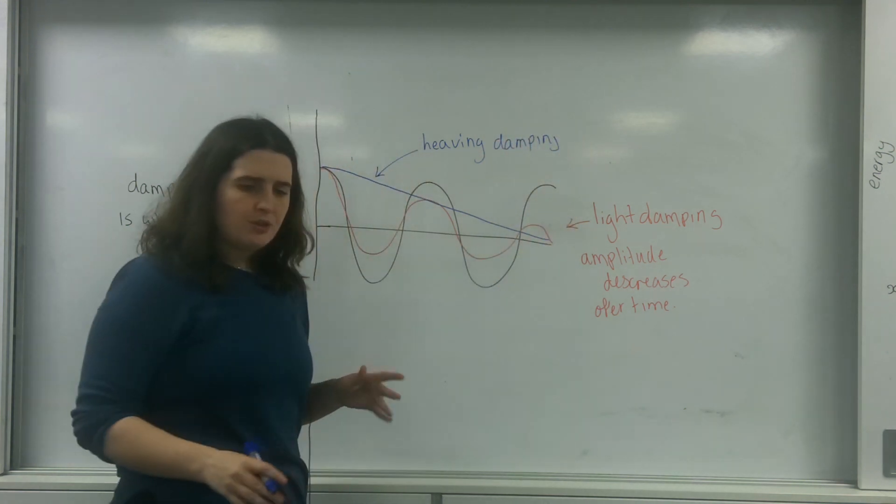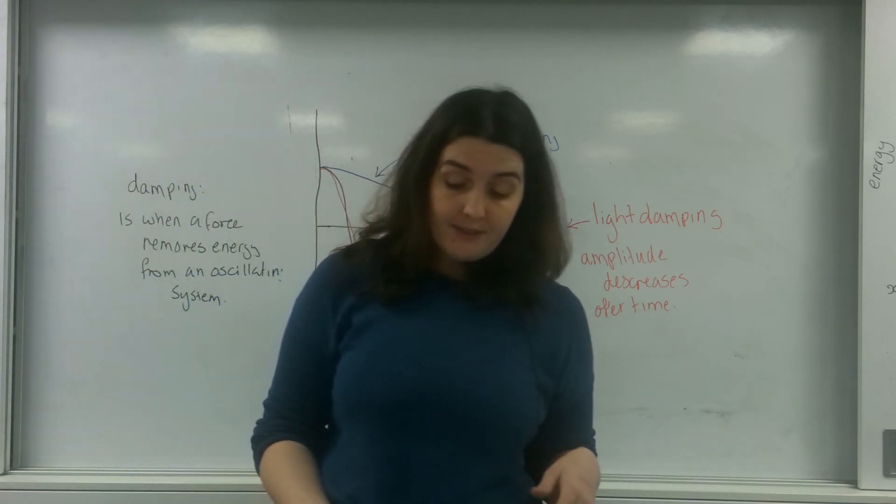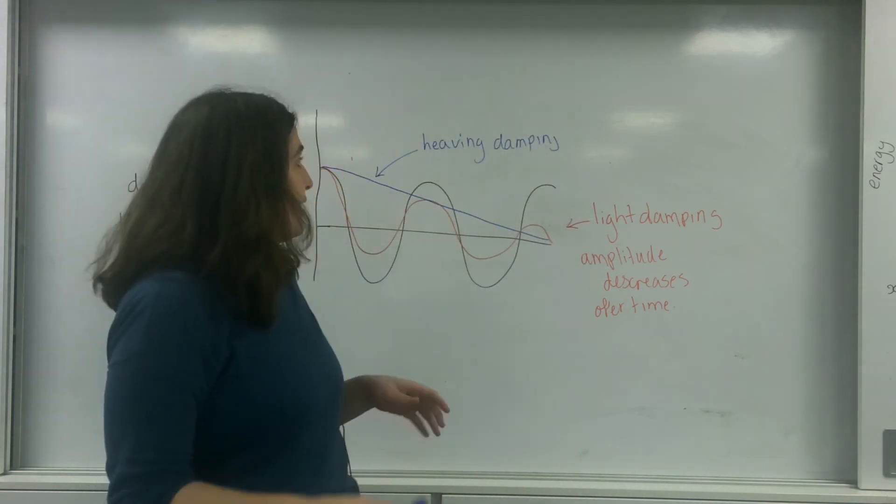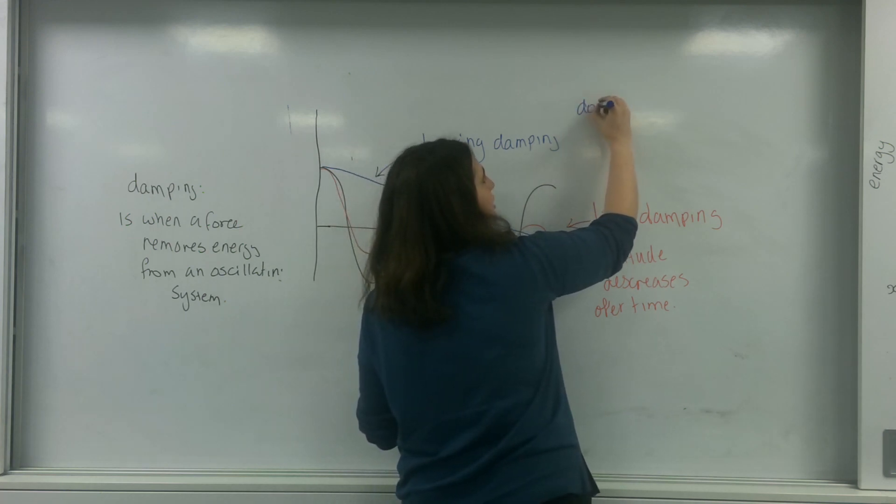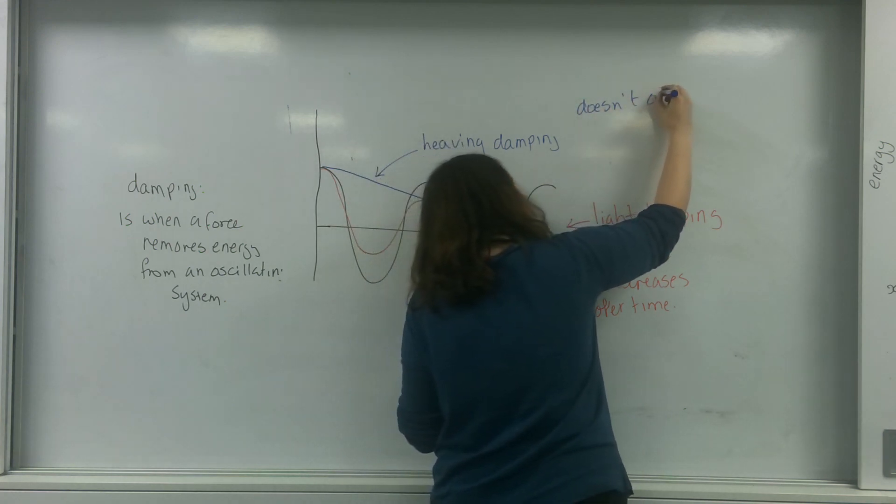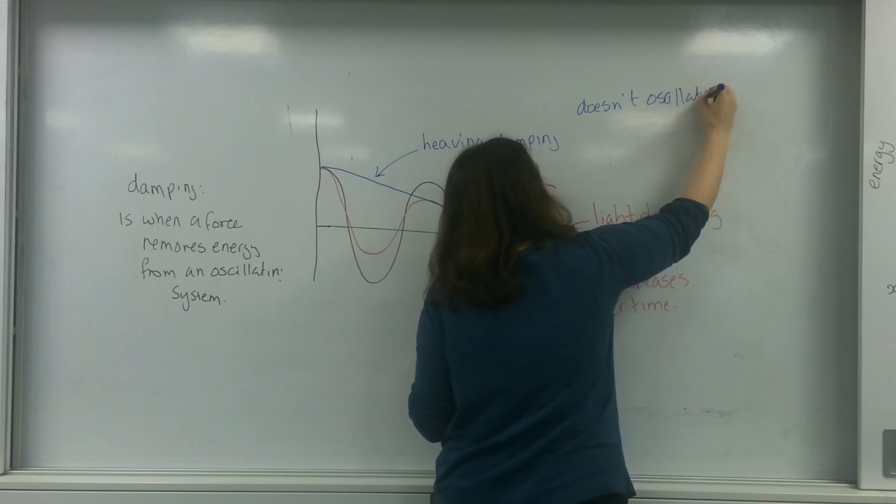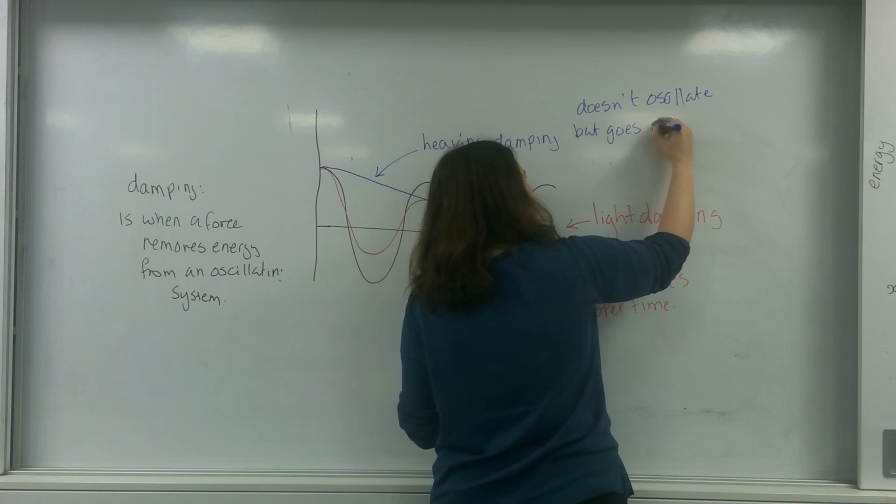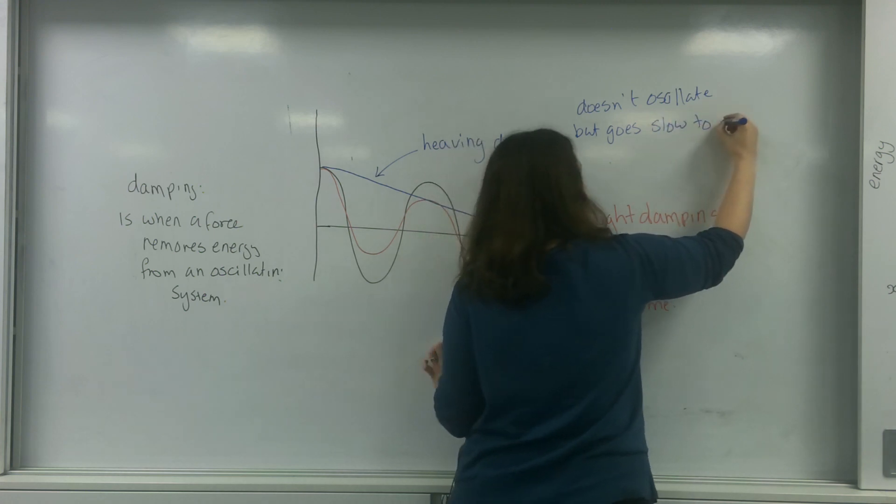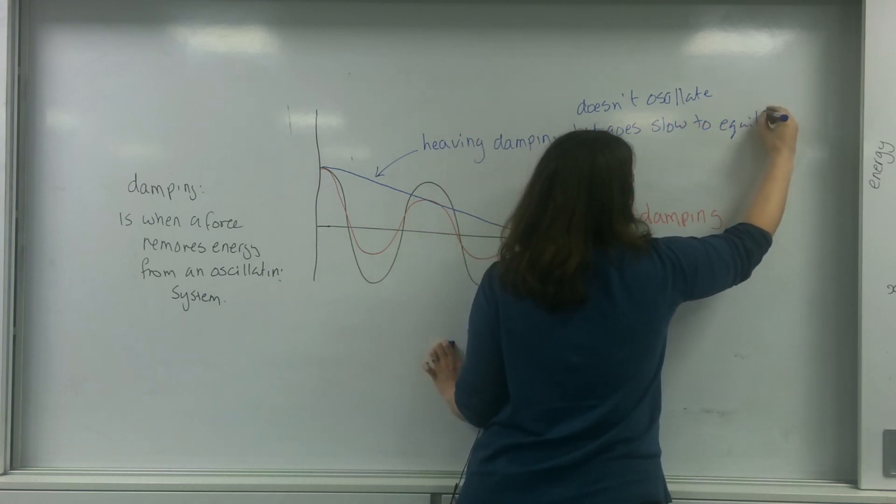This is the kind of damping which is used for something, normally a safety measure. Heavy damping is when it doesn't oscillate but goes slowly to equilibrium over time.